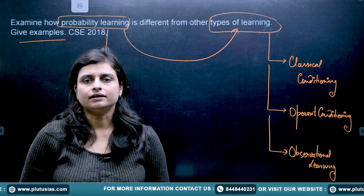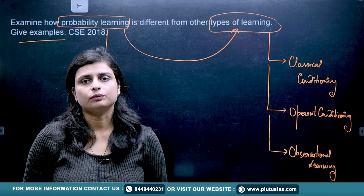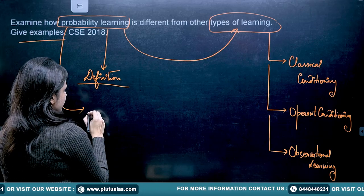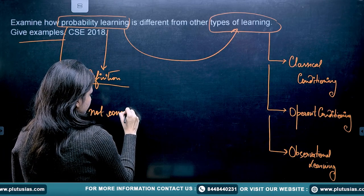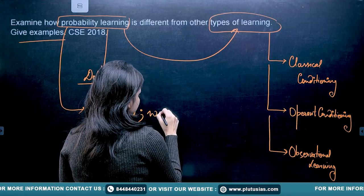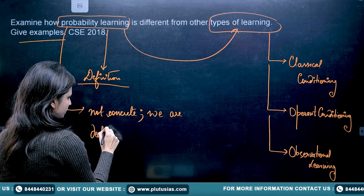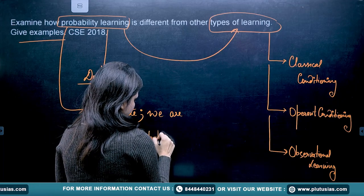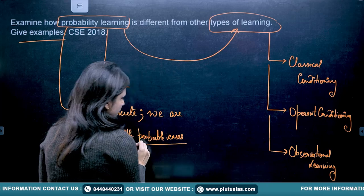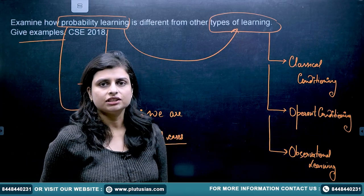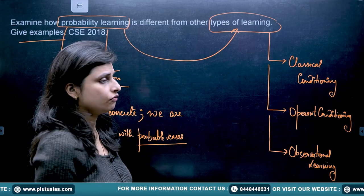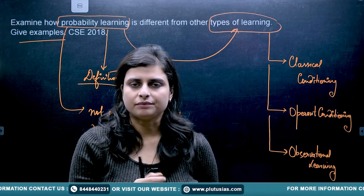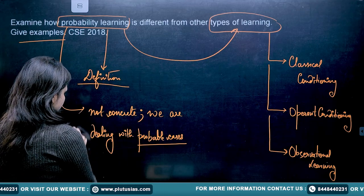Probability learning is where the result is not concrete — it is not something very absolute. In probability learning, we always deal with probable cases. The results are not concrete; however, we are dealing with probable cases expressed as percentages. The entire procedure in probability learning is not about an instant or concrete result — it's something like maybe 30%, maybe 40%, maybe 60%. That's how we deal with percentages.